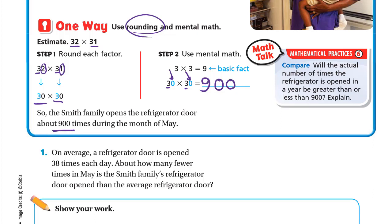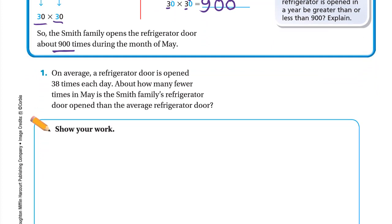Here is another question: on average, a refrigerator door is opened 38 times each day. About how many fewer times in May is the Smith family's refrigerator door opened than the average refrigerator door? 'How many fewer' means we subtract. We need to find the average for one month: 38 times each day × 31 days in May.